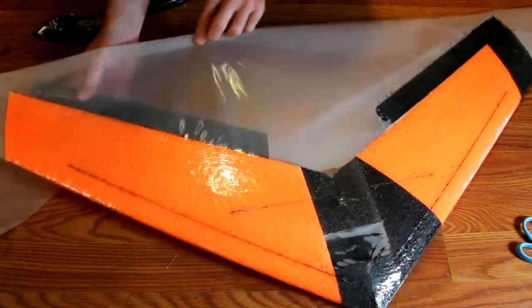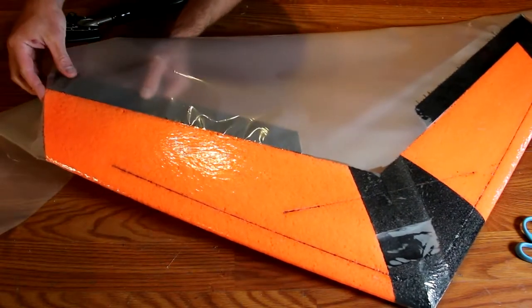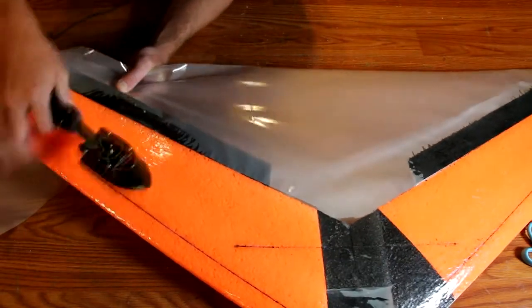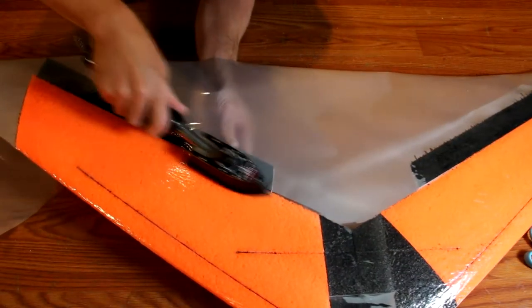Once ironed on, go ahead and trim off the excess. You'll want to flip the elevon upside down and iron on the bottom side to be sure you have a solid hinge.